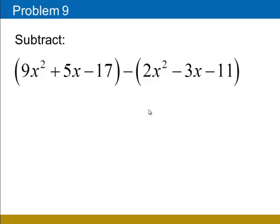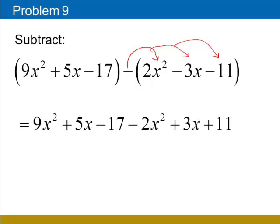In this example, we'll be subtracting two polynomials. The rule to remember when subtracting two polynomials is to distribute the negative sign to each term in the second polynomial — we're going to change the sign of 2x squared, negative 3x, and negative 11. Once we've changed those signs, the last step is to combine like terms. Keep in mind that when you combine like terms, the variable part stays the same; only the coefficients change.